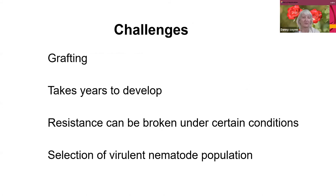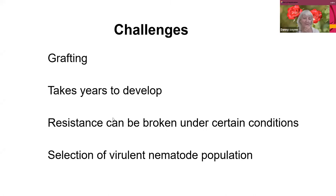Grafting is also part of resistance — you can have resistant rootstock in roses and tomatoes. The trouble is, if there's so little resistant material out there, there's a temptation to use it too often, and then resistance can be broken. You might also select a virulent nematode population if you overuse the resistant material.